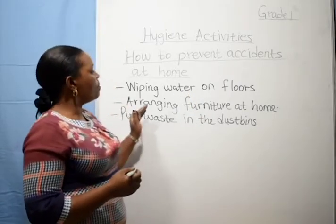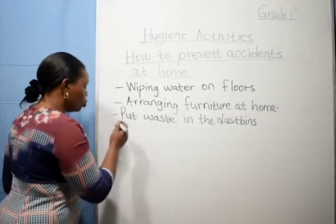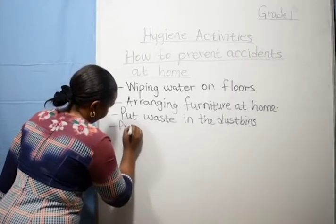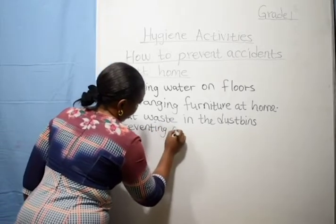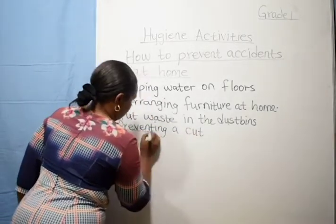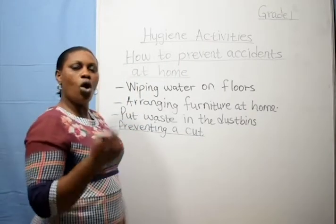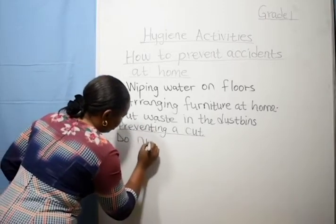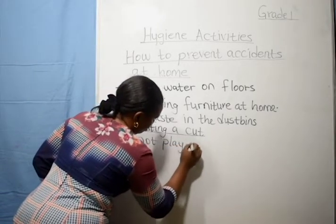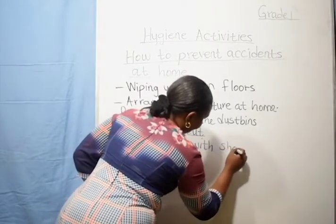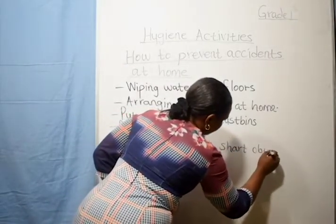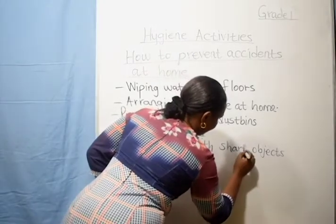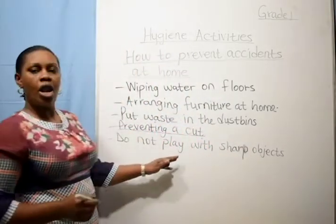Now we prevent a cut. You are not supposed to play with a knife. To prevent a cut, do not play with sharp objects. You can be cut by a sharp knife or iron. Do not play with sharp objects like a knife or iron sheet.